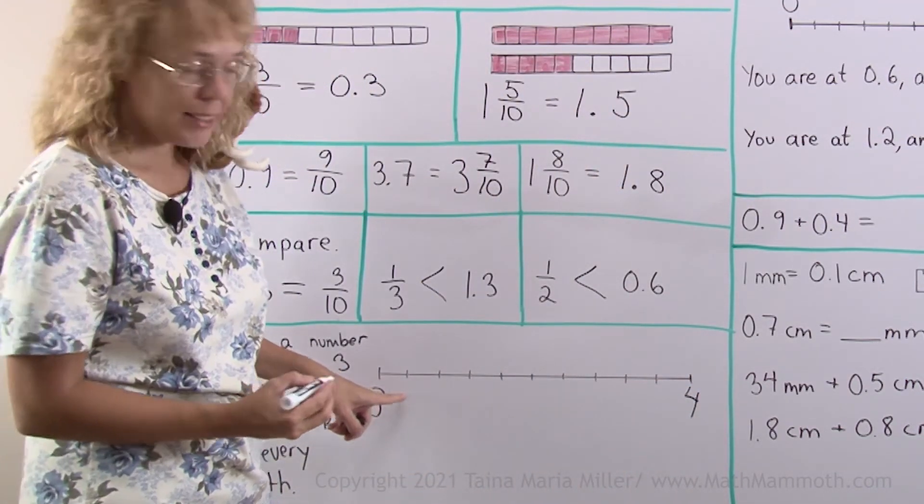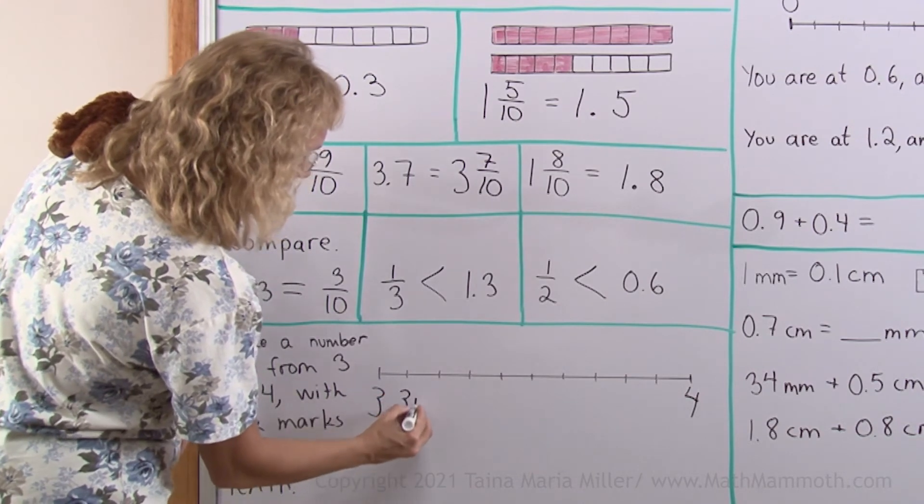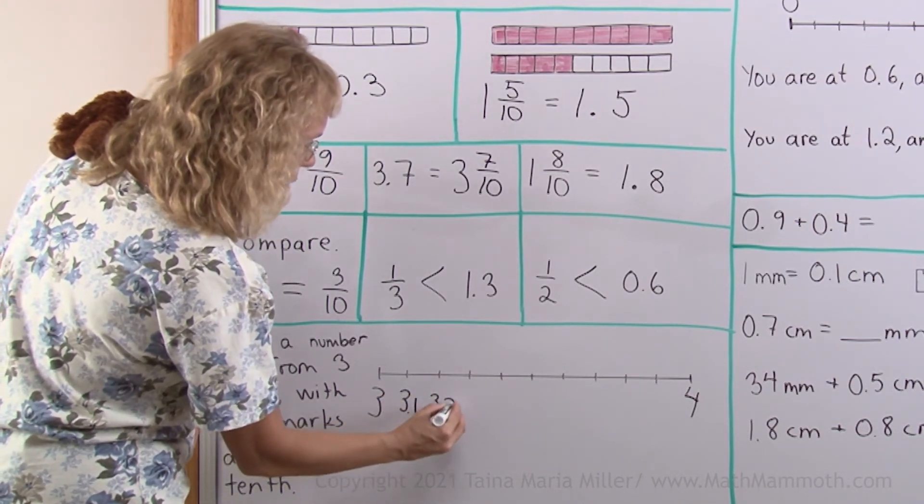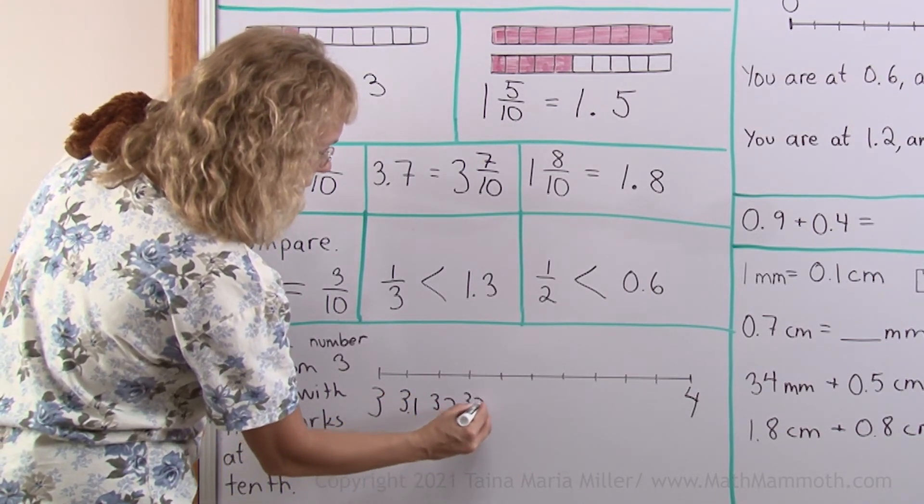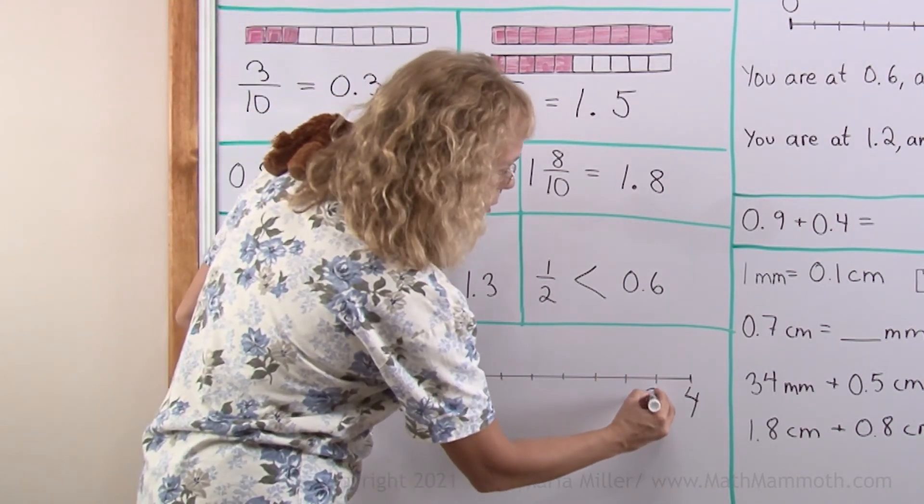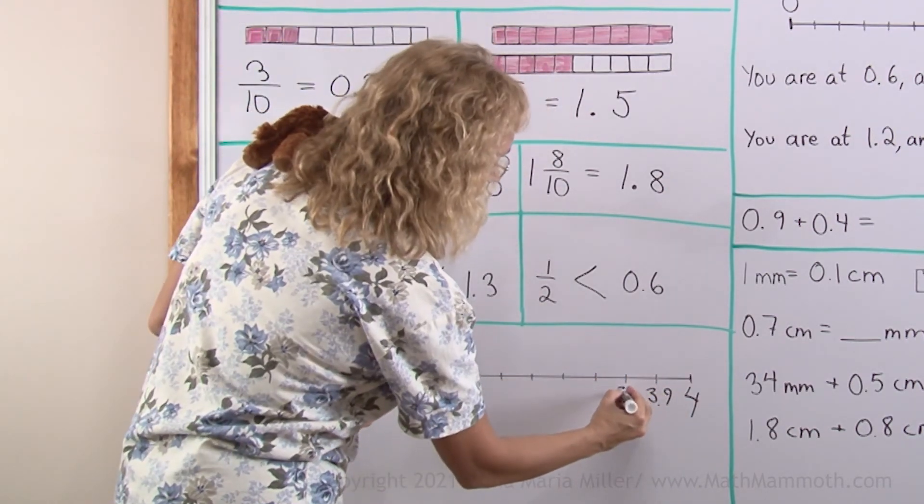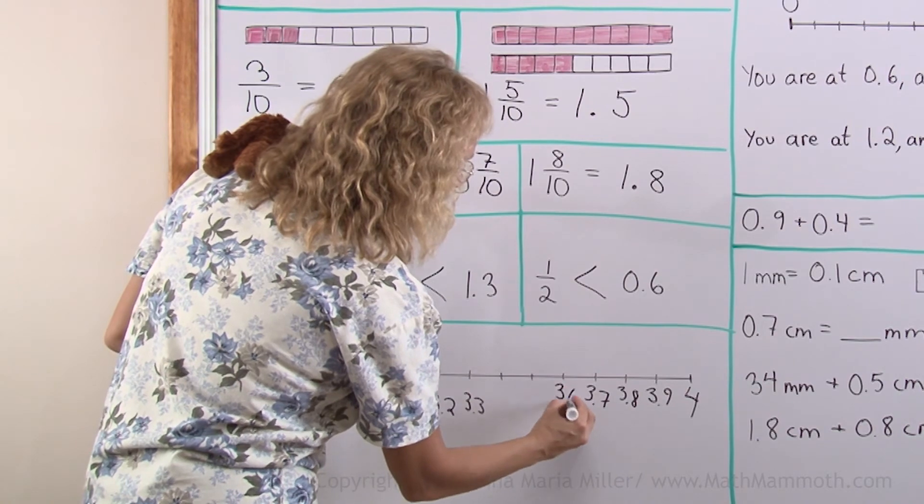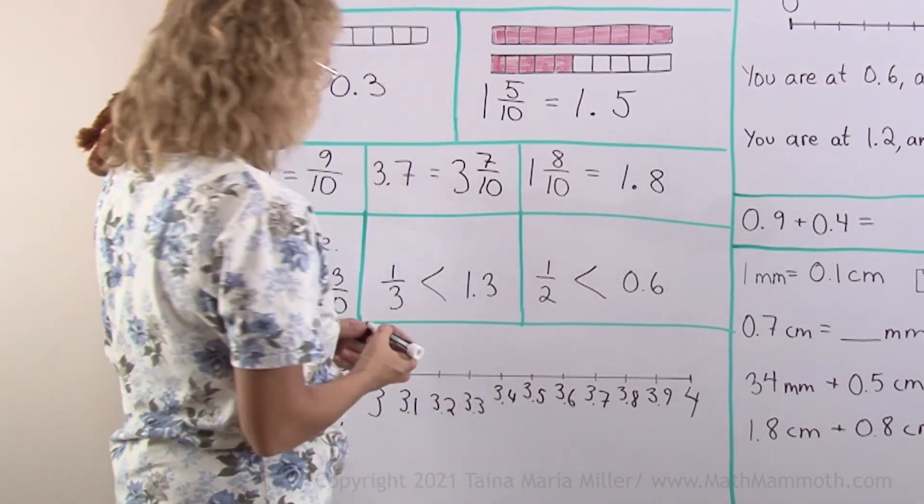And here would be 3.1, 3 and 1 tenth. Here's 3.2, 3 and 2 tenths, 3.3 and so on. This last one would be 3.9, 3 and 9 tenths.